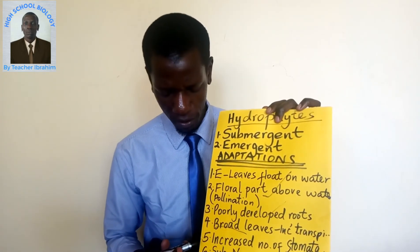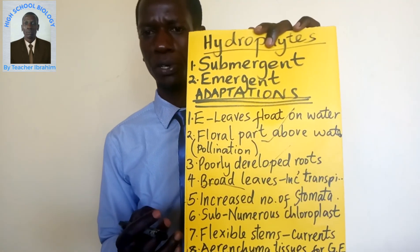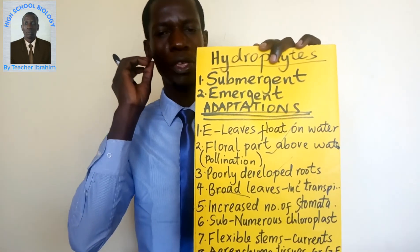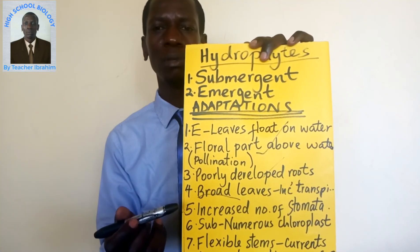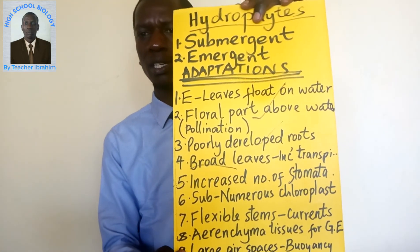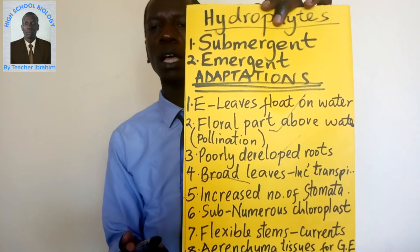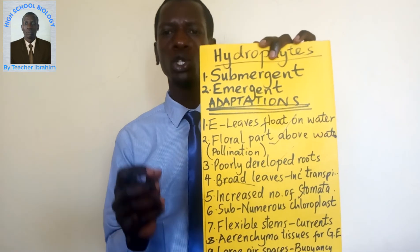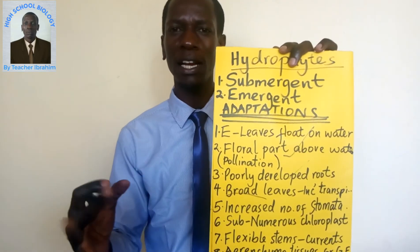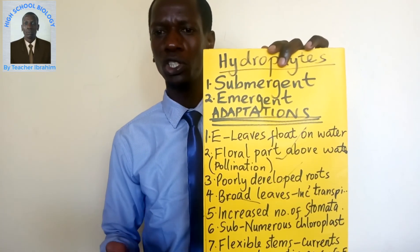Number five: hydrophytes have an increased number of stomata so as to increase the rate of transpiration — the more stomata, the higher the rate of transpiration. Number six: they have numerous and sensitive chloroplasts which enable them to photosynthesize even in low light intensity. Number seven: they have flexible stems to prevent them from being broken by the waves and water currents.